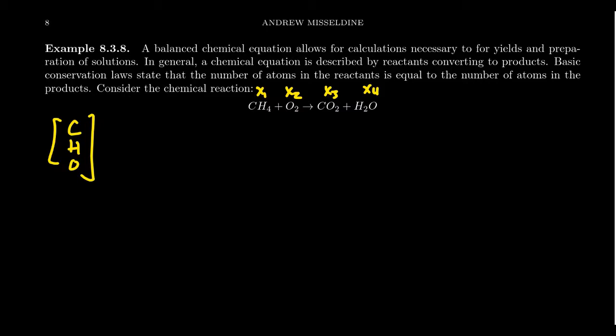And so with these variables and vectors in consideration, then this naturally leads to a vector equation. So we have X1 times, then let's read this. We have one carbon, four hydrogens, no oxygen. So that's our methane vector. Then we're going to have an oxygen vector, which has no carbon or hydrogen, but it has two oxygen atoms there. And so that's the left-hand side, the reactant side.